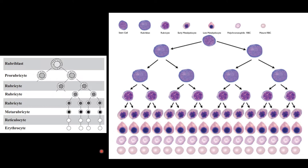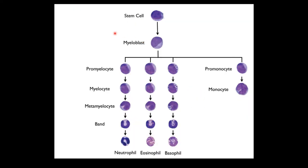WBCs also originate from the same myeloid stem cells. Through the action of different growth factors, they become myeloblasts and differentiate into different types of WBCs: myelocytes, metamyelocytes, band cells, and granulocytes — primarily neutrophils, eosinophils, and basophils. You also have monocytes, which will later become macrophages in different parts of the body.